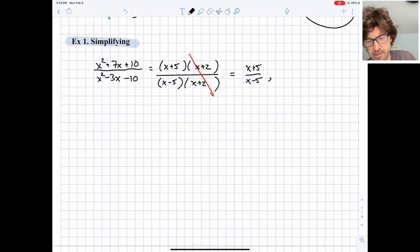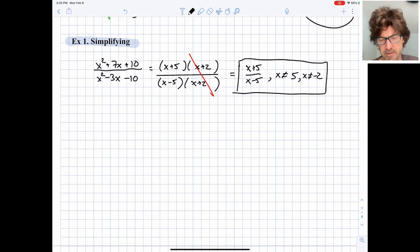And we need to keep in mind that x cannot be 5, and x can also not be negative 2 because of that term that we canceled out. So this is what the final answer would look like for that one: x plus 5 over x minus 5 with x not equal to 5 or negative 2.